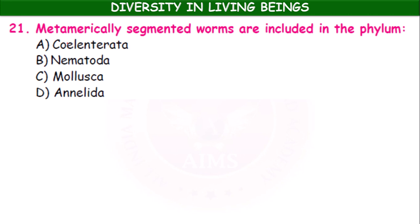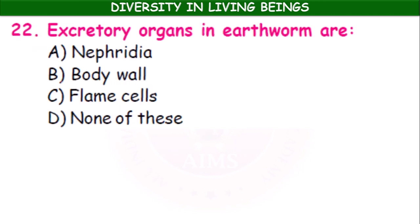Metamerically segmented worms are included in the phylum Annelida. The excretory organs in earthworms are nephridia.